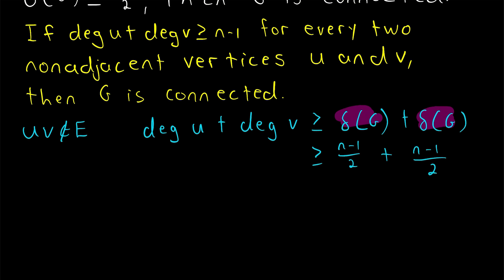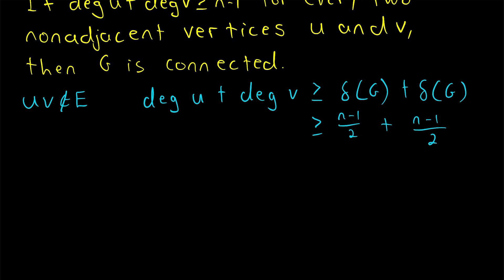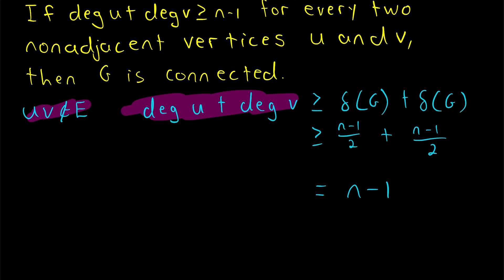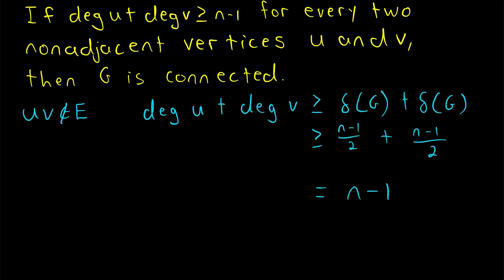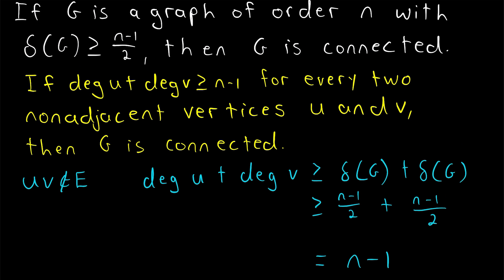That's equal to 2 times n minus 1 over 2, which equals n minus 1. So we've shown that the degree sum of any two non-adjacent vertices in our graph is greater than or equal to n minus 1. We can therefore apply the theorem we proved earlier to assert that our graph g must be connected. That proves our theorem: if g is a graph of order n with minimum degree delta of g greater than or equal to n minus 1 over 2, then g is connected.